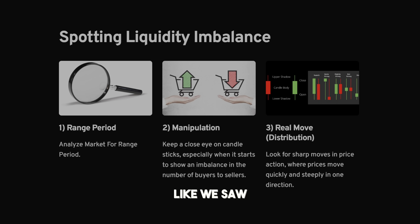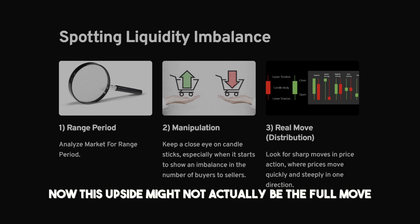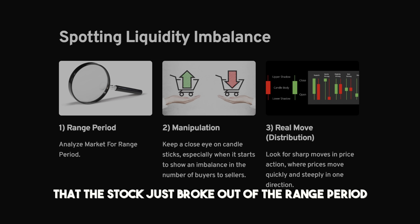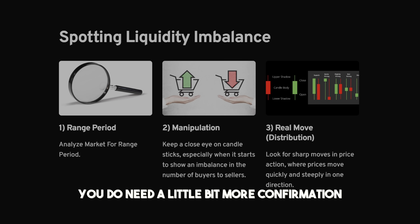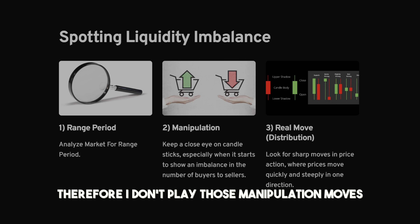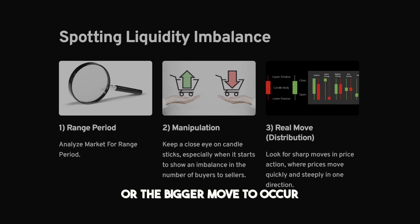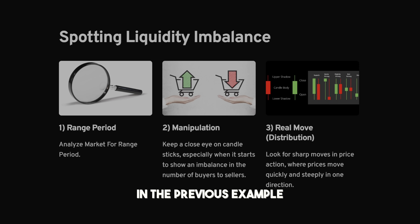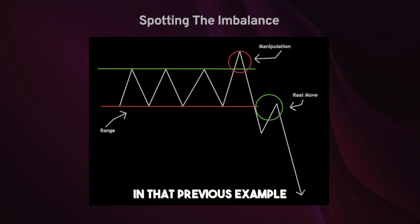In that previous example, once we broke out of the range period we saw the stock moving to the upside. But this upside might not actually be the full move — a lot of people are going to buy into it thinking the stock just broke out. As a professional trader you need more confirmation. I'm not a breakout trader, so I don't play those manipulation moves. I simply wait for the real move, the bigger move, to occur before I enter. That's exactly what step three is: the real move or distribution. We look for sharp moves in price action where price moves quickly and steeply in one direction. In the previous example we saw how price moved to the downside after the manipulation move.